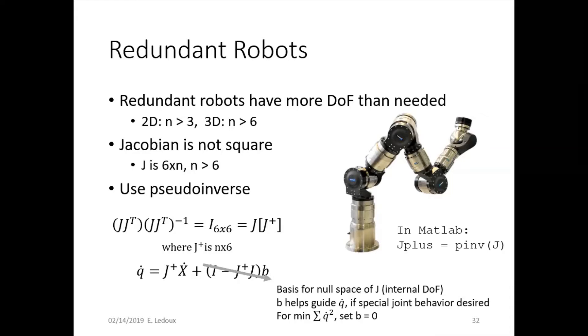This means the Jacobian is not square because it's a six by n. If n is greater than six, you have to use a pseudo inverse. This is J J transpose, which is a square matrix, times J J transpose inverse.